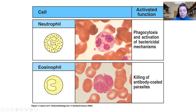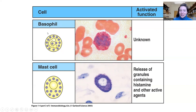Eosinophils are primarily there to help kill parasites. Since in parts of the world like the U.S., parasites are not that common, it's thought that eosinophils contribute to allergy. Basophils and mast cells are also granular — you can see all of these small vesicles packed with granules. The basophil is also involved in the parasite response and allergy, but it's not as well studied.